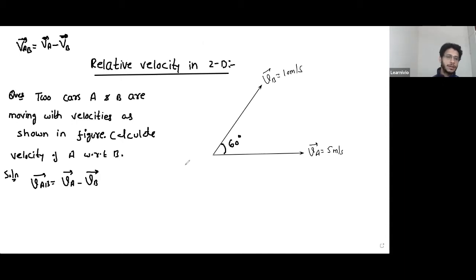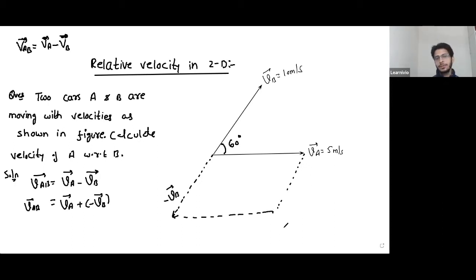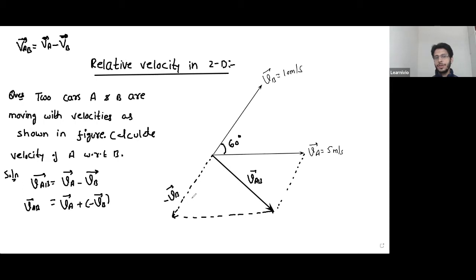In vector subtraction, VA minus VB means you are actually adding VA to minus of VB. This minus VB acts in a direction opposite to that of VB. And this is where the parallelogram law applies. The velocity VAB is basically the sum of VA and minus of VB using the parallelogram rule.